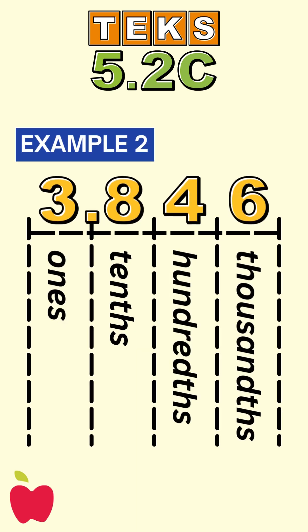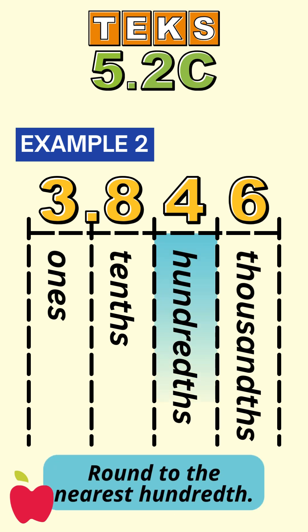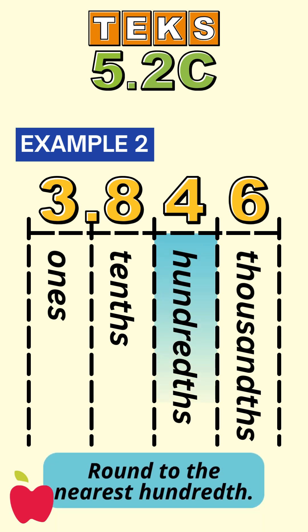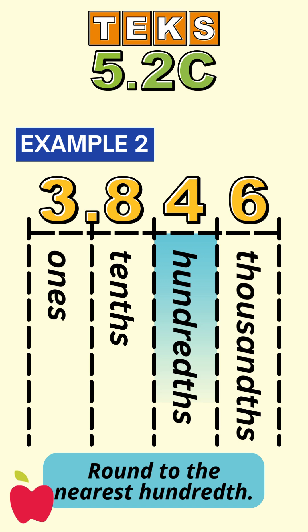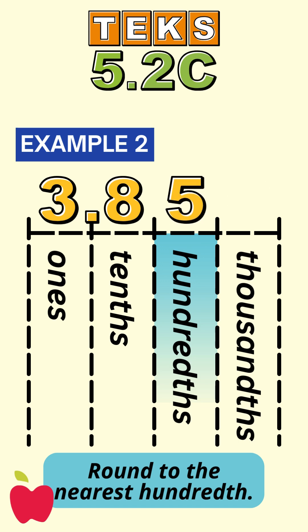Let's round three and eight hundred forty-six thousandths to the nearest hundredth. The hundredths place is the four, and the digit after that is a six. Since six is five or more, we round the four up by one, so three and eight hundred forty-six thousandths rounded to the nearest hundredth is three and eighty-five hundredths.